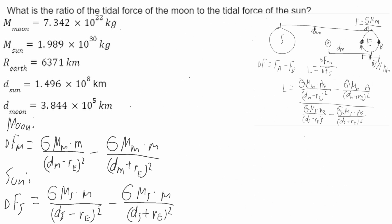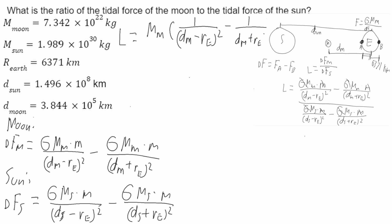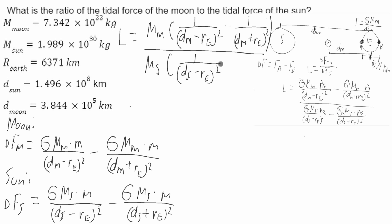I'll rewrite this. L will be equal to the mass of the moon times (1 over (D_m minus R_e) squared minus 1 over (D_m plus R_e) squared), all over the mass of the sun times (1 over (D_s minus R_e) squared minus 1 over (D_s plus R_e) squared).